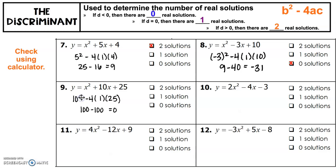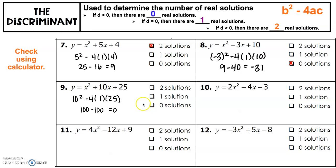For problem 9, b² − 4ac gives 10² − 4(1)(25) = 100 − 100 = 0. Since the discriminant is 0, there is exactly one solution.